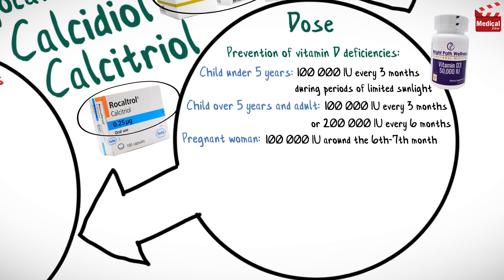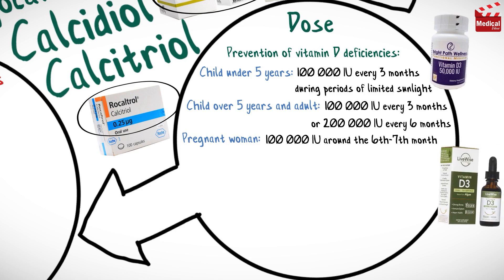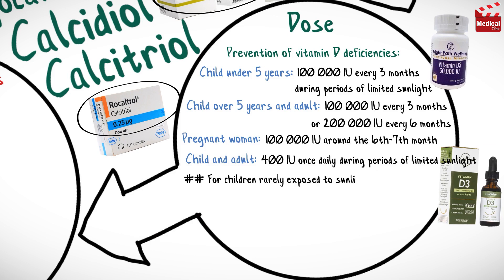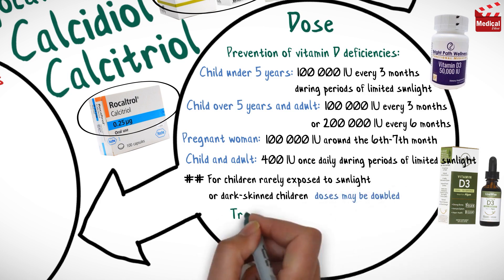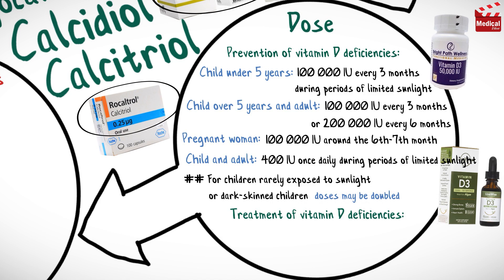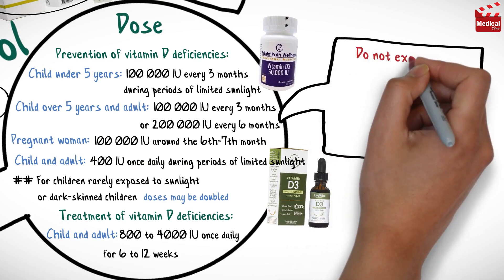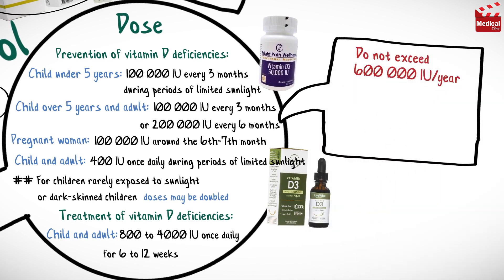When using an oral suspension for children and adults, the usual dosage is 400 IU once daily during periods of limited sunlight. For children rarely exposed to sunlight or dark-skinned children, doses may be doubled. For treatment of vitamin D deficiencies, the usual dosage for children and adults is 800 to 4,000 IU once daily for 6 to 12 weeks, then continue with the preventive dose. Do not exceed 600,000 IU per year.